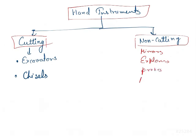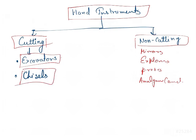The non-cutting instruments are mirrors, explorers, probes, and amalgam condensers. Coming to the cutting instruments, which are important for your exam, we have two broad categories: excavators and chisels. Excavators are used for caries removal and the refinement of internal parts of the preparation — for example, sharpening internal line angles or creating retentive features.